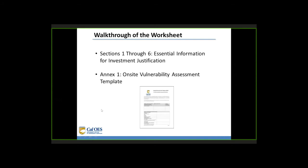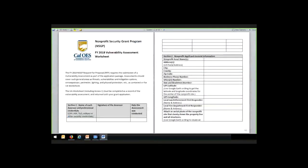We'll now transition to doing a walkthrough of the worksheet itself. The worksheet has two parts: the worksheet itself, Sections 1 through 6, which is essential information for the investment justification, and Annex 1, which is the on-site vulnerability assessment template. Before you will see the fiscal year 2018 proposed Vulnerability Assessment Worksheet.